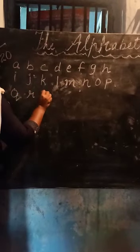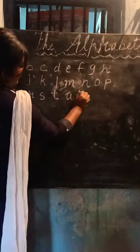Now children, look at the board. I am going to write small letters on the board. A, B, C, D, E, F, G, H, I, J, K, L, M, N, O, P, Q, R, S, T, U, V, W, X, Y, Z. These are small letters. When we write like this, children, they are called small letters.